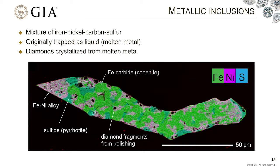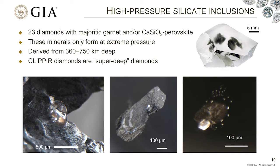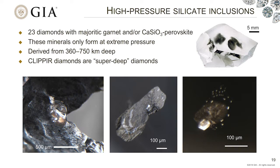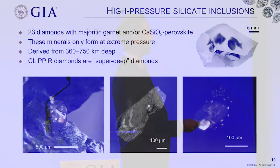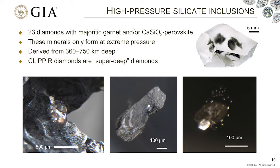Although 70% of CLIPPER diamonds contain metallic iron, they also include a mixture of other inclusions — particularly high-pressure silicate inclusions. I saw 23 diamonds containing majoritic garnet and/or a calcium silicate perovskite phase, which are minerals that only form at extreme pressures very deep in the earth. These allow us to bracket the depth of formation to at least 360 kilometers and maybe as deep as 750 kilometers. Remember, most diamonds form about 150 to 200 kilometers deep — so these diamonds form three, four, maybe even five times deeper than most diamonds, in a completely different part of the mantle. CLIPPER diamonds are in fact super deep diamonds.